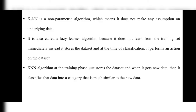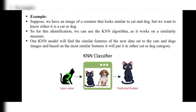For example, suppose we have an image of a creature that looks similar to both a cat and a dog, and we want to know whether it is a cat or dog. We use the KNN algorithm as it works on a similarity measure. Our KNN model will find the similar features of the data to the cat and dog images, and based on the most similar features, it will place it in either the cat or dog category.